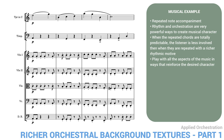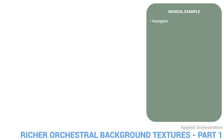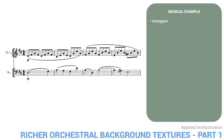When we look at a first-rate orchestrator or composer, we observe a kind of generosity in the amount of work they put into these background layers. Arpeggios are the second main kind of accompaniment figuration. Here again, the details make all the difference. Here's a very basic realization of a cello melody accompanied by clarinet arpeggios.